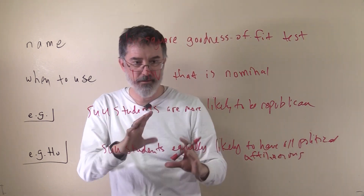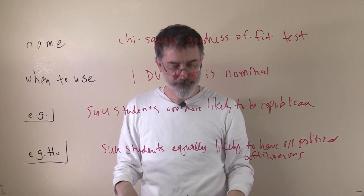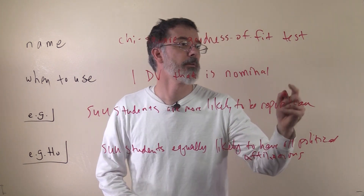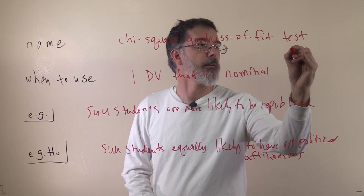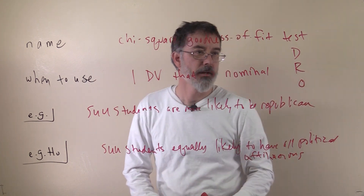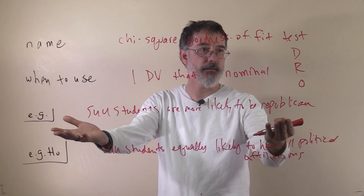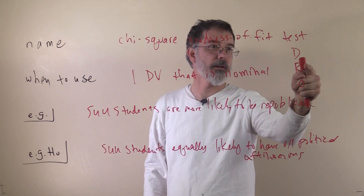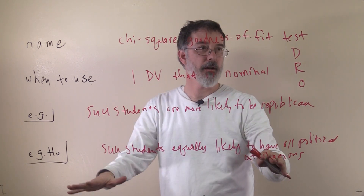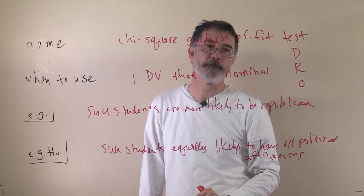This would be a study where we have students come in and we ask them, for example, are you a Democrat, a Republican, or other. Our research hypothesis is that they are more likely to pick Republican. The null hypothesis says that they are equally likely to pick all three.